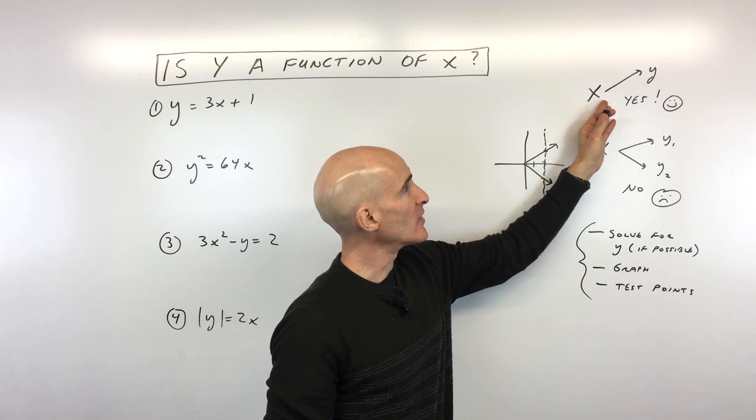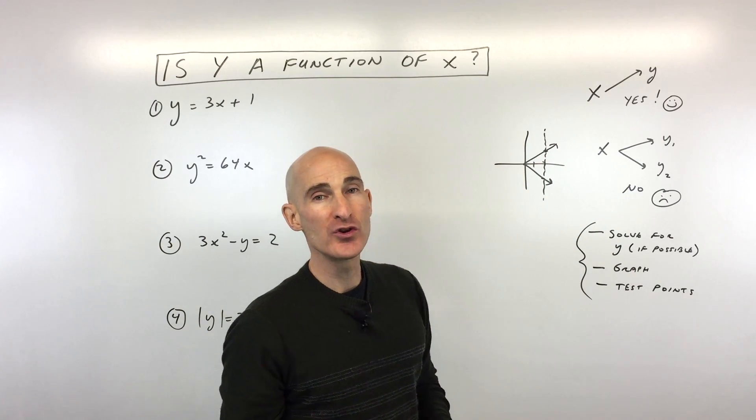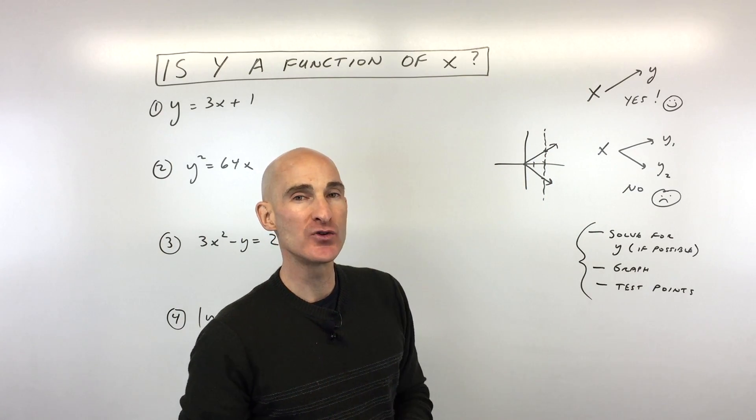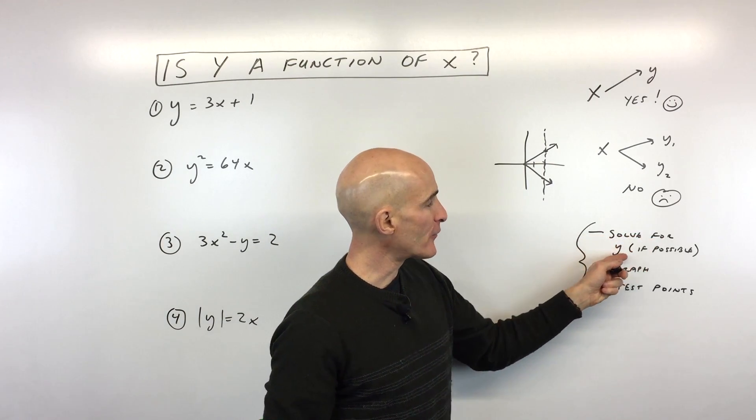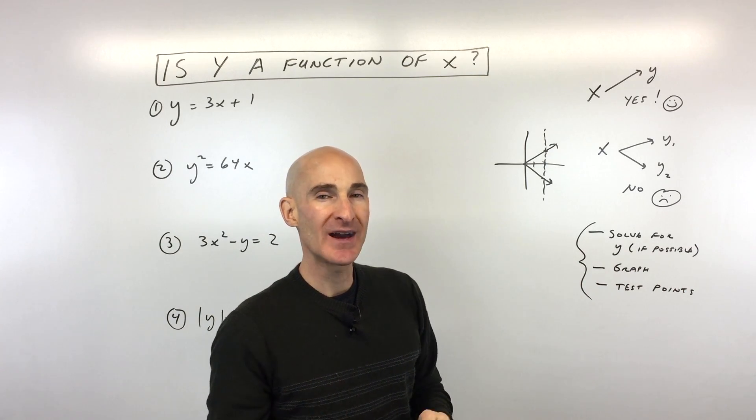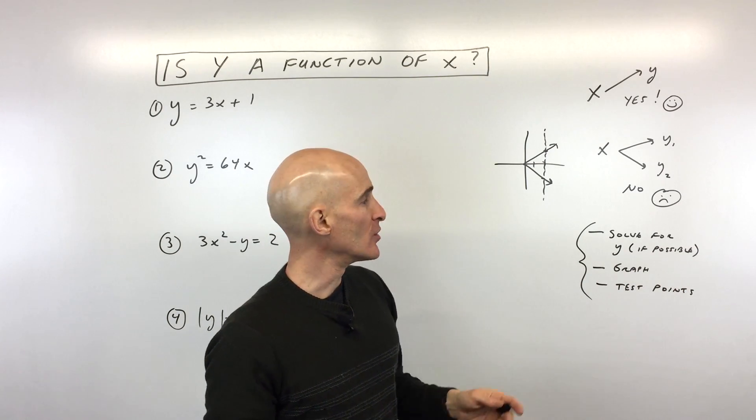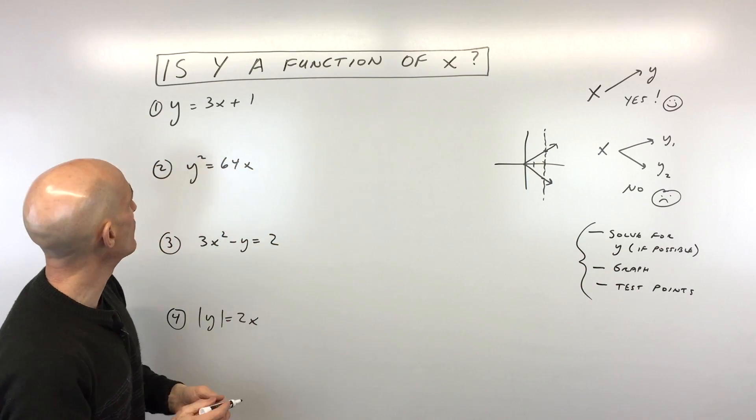But you can think of it either like this mapping that I've drawn here, or you can graph it, or you can plug in some points and test it out using the equation itself. Another option as well is to solve for y if possible, try to get that y value by itself. And you'll be able to identify whether there's more than one output for a given input. So let's go into some examples and you'll see what I mean by this.